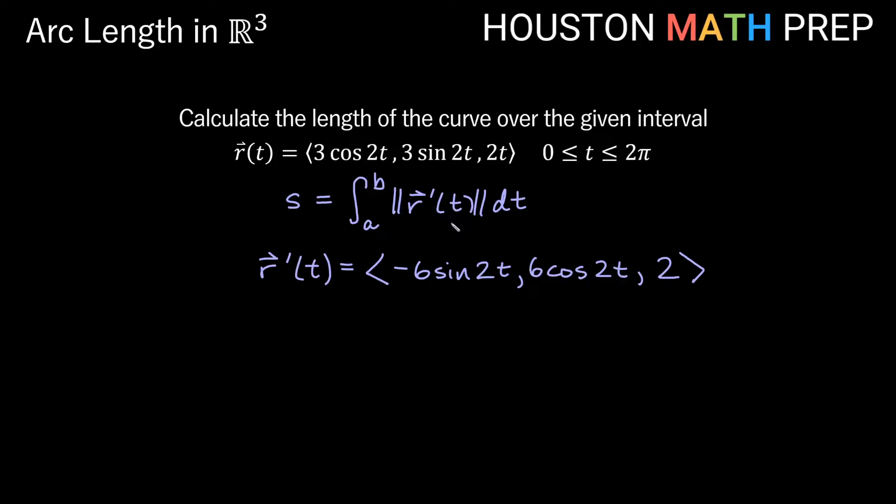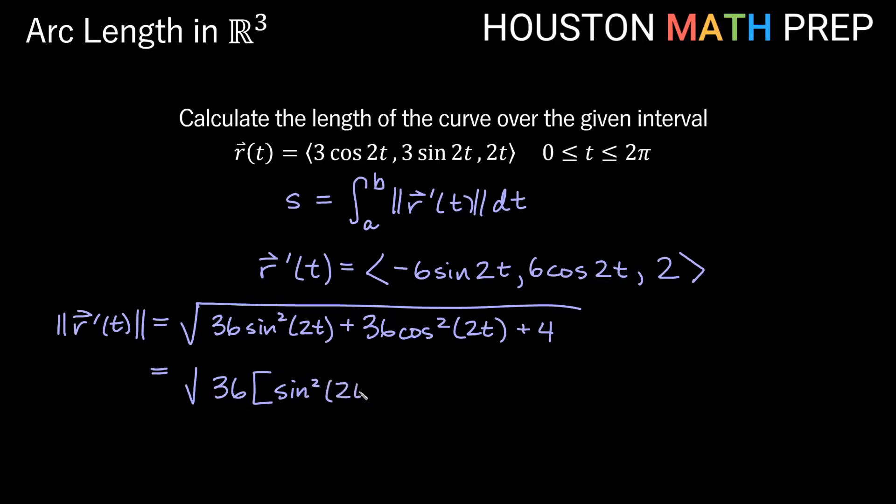So that's our r prime of t. Now we'll actually need the magnitude of that r prime of t to integrate. The magnitude of r prime, remember that's going to be the square root of all this stuff squared. So if I square this first thing, we'll get 36 sine squared of two t. Here we'll get, so plus 36 again, this time cosine squared of two t. And here two squared will give us four.